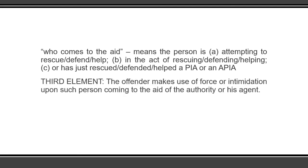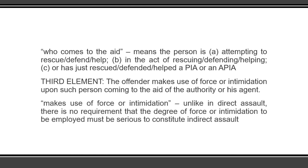The third element states that the offender makes use of force or intimidation upon such person coming to the aid of the authority or his agent. The offender is assaulting not the person in authority or the agent himself, but the person coming to the aid of such person in authority or his agent, by the use of force or intimidation. Take note, however, that unlike direct assault, there is no requirement that the degree of force or intimidation employed must be serious to constitute indirect assault. The provision simply states that the offender makes use of force or intimidation.